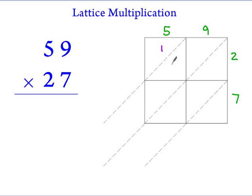So 5 times 2 gives 10, 9 times 2, 18, 5 times 7, 35, and 9 times 7, 63.